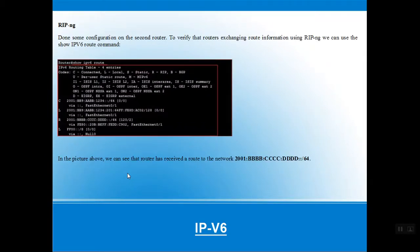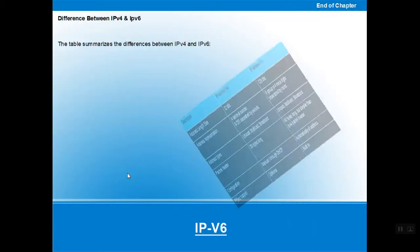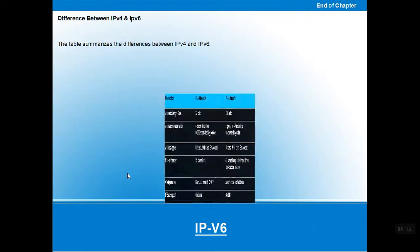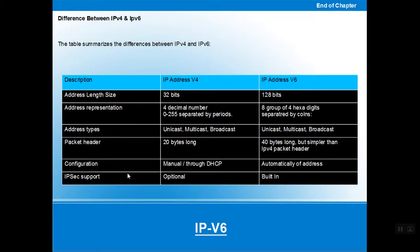After configuring RIPng, additional commands are applied to a second router. Using 'show ipv6 route' will display the IPv6 routing table and show how RIPng routing information is populated.